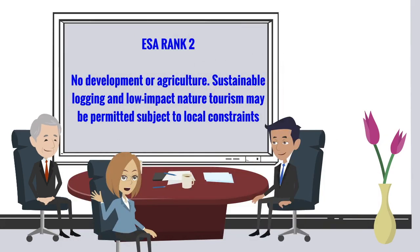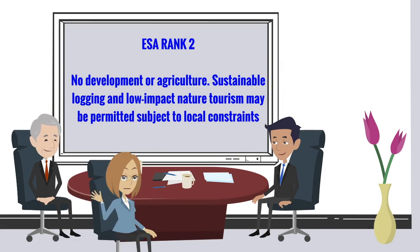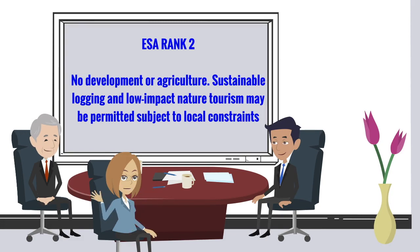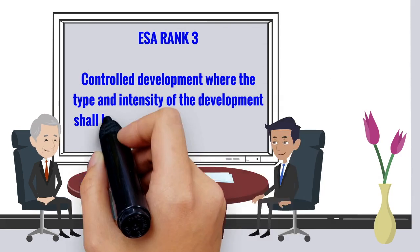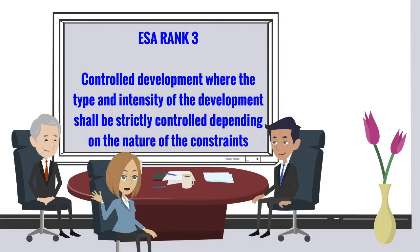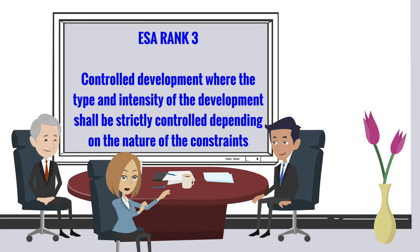Second, ESA Rank 2: no development or agriculture. Sustainable logging and low-impact nature tourism may be permitted subject to local constraints. Third, ESA Rank 3: controlled development, where the type and intensity of development shall be strictly controlled depending on the nature of the constraints.